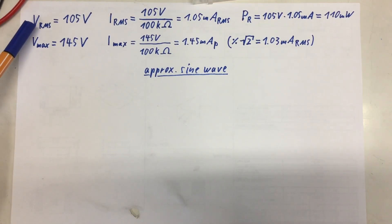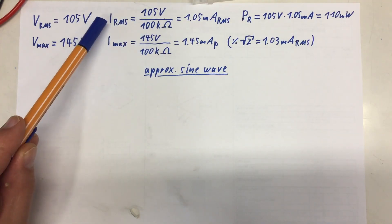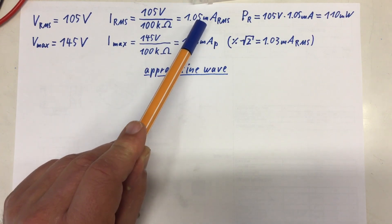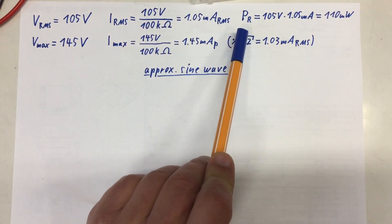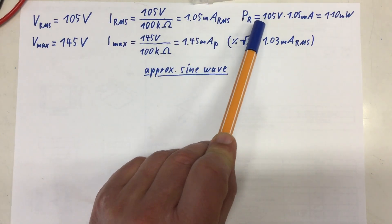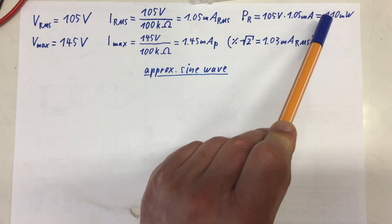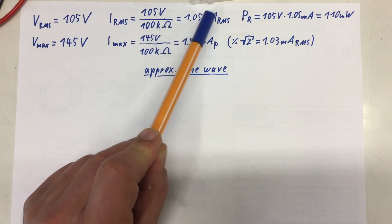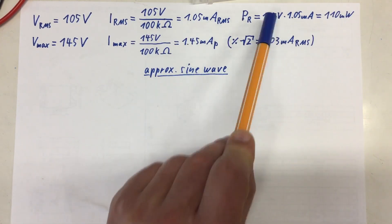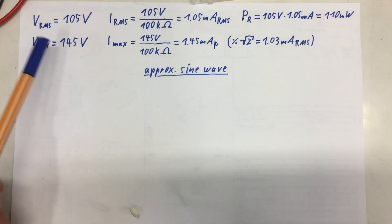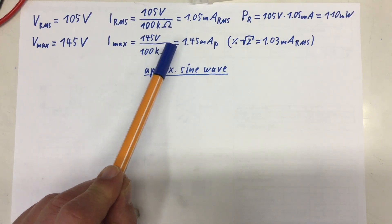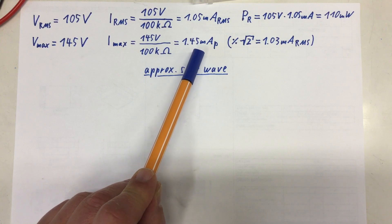We measured an RMS voltage of 105 volts across that 100 kilo-ohm resistor. And this gives us an RMS current of about 1.05 milliamps. And the power dissipation in the resistor, 105 volts times 1.05 milliamps is 110 milliwatts. Because these are 1.05 milliamps RMS. So you can do that power calculation. VMAX was 145 volts.